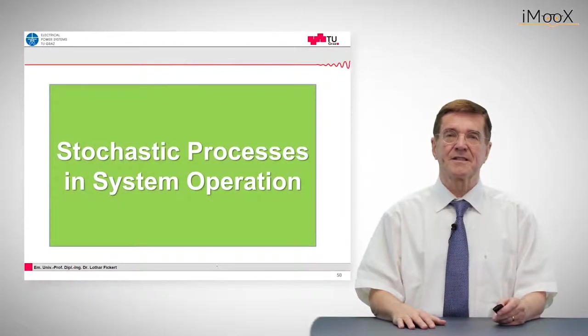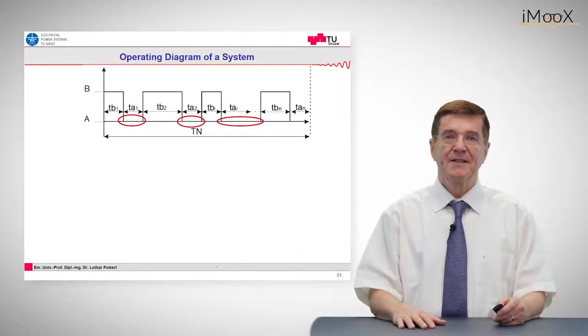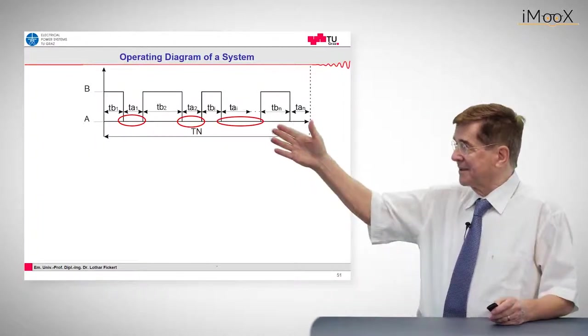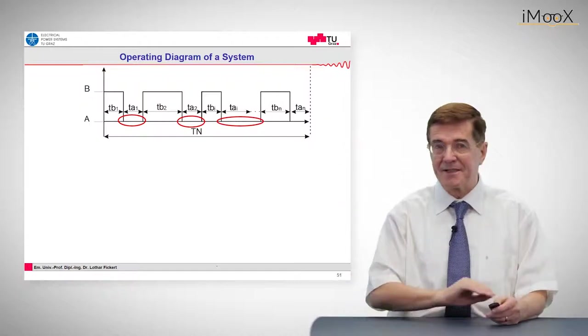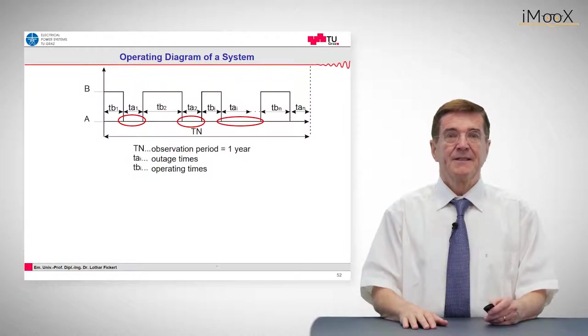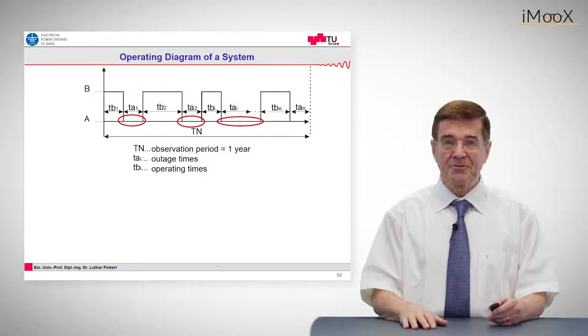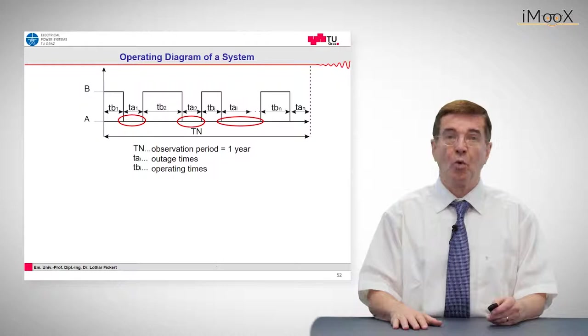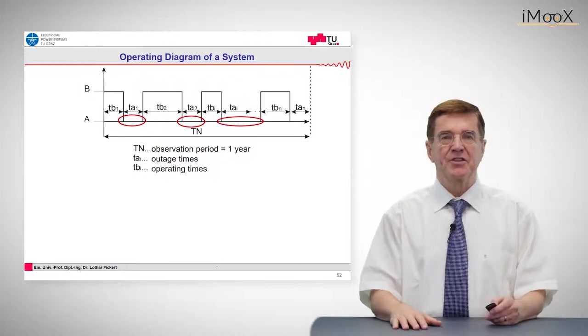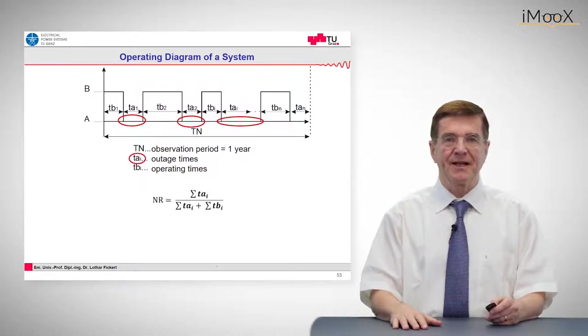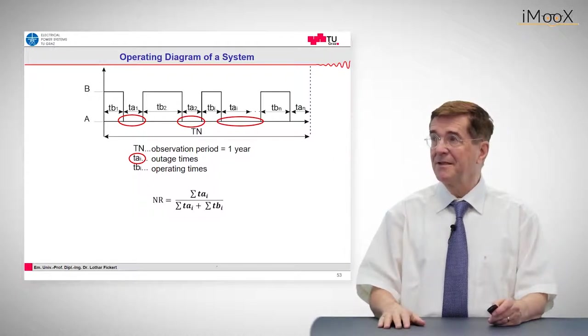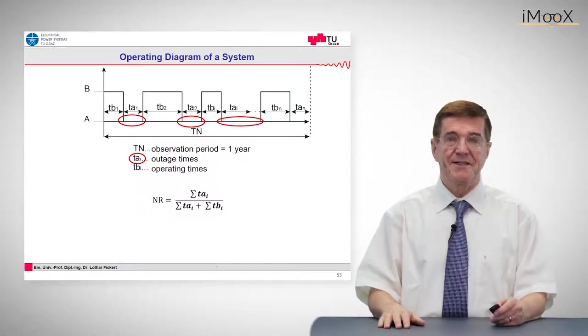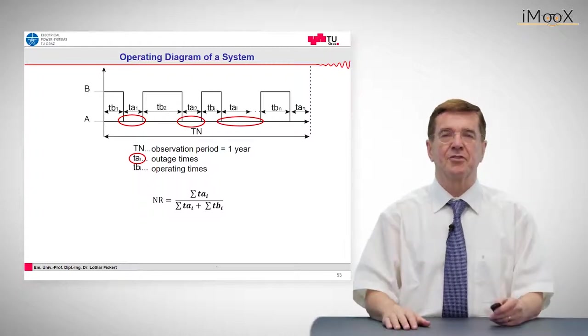The last thing is stochastic processes in system operation. To our right we see a system which has up-states and down-states. The up-states means full operation, down-states means out of service for whatever reason. We have a certain observation period - in the rule we say one year when it comes to protection - and we have outage times and operating times. Now the non-reliability is given by these red marked areas of time, which is the down times.